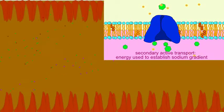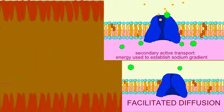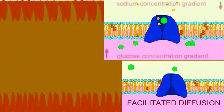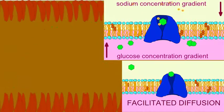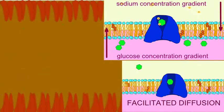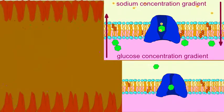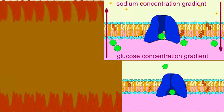The monosaccharide fructose can enter through facilitated diffusion. Once these monosaccharides enter the intestinal cells, they pass through facilitated diffusion through the basolateral membrane of these intestinal cells and enter the blood capillaries.